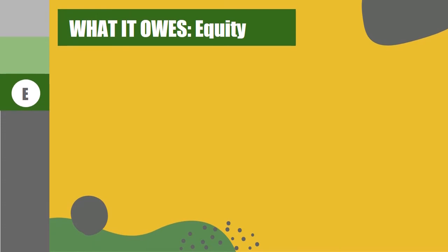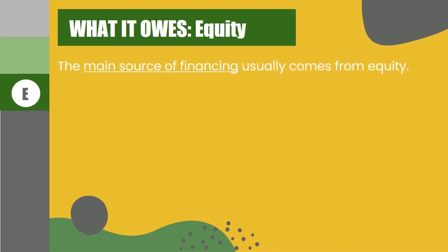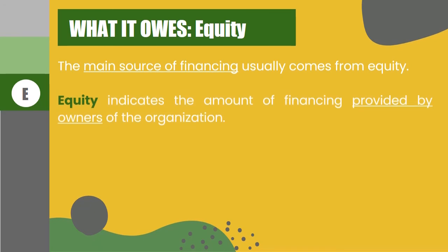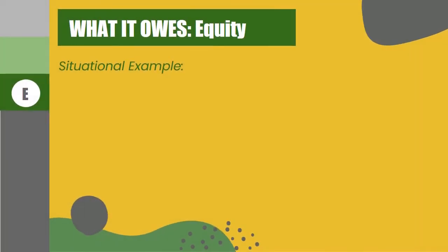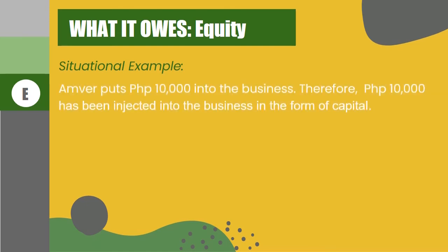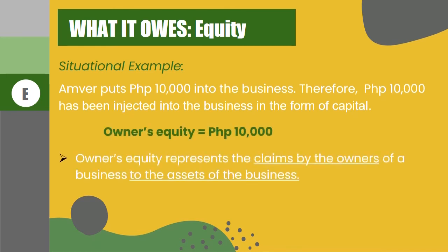For the next part of what it owes, ang next na element ay ang ating equity. The main source of financing usually comes from equity. Equity indicates the amount of financing provided by the owners of the organization. It also represents the amounts belonging to the owner — one example nito ay yung capital. For equity, let's have an example: Amver puts $10,000 into the business. Therefore, $10,000 has been injected into the business in the form of capital. This capital is expected to be used to fund the company's operation and make it possible for the company to achieve its objectives.